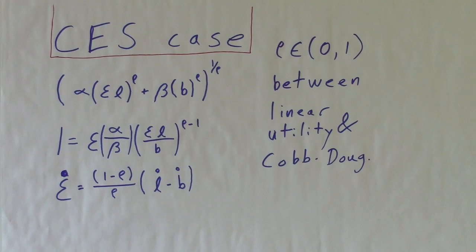The CES case has a very similar growth formula. 1 minus rho over rho gives us a new coefficient, with rho between 0 and 1. Perhaps price data is needed to estimate the unknown value of rho.